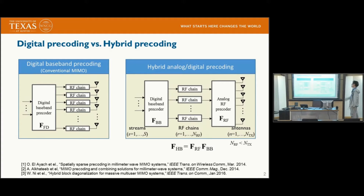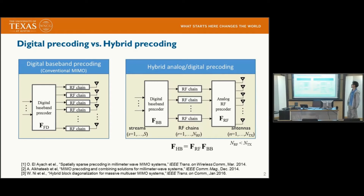The pre-coding is divided into the baseband part and the RF pre-coding part. These two pre-coders are connected through the RF chains. The number of RF chains is less than the number of antennas, so it can reduce the power consumption.